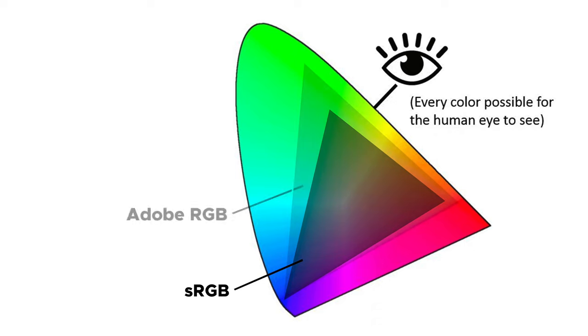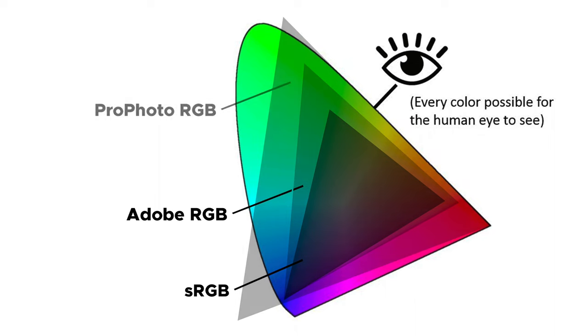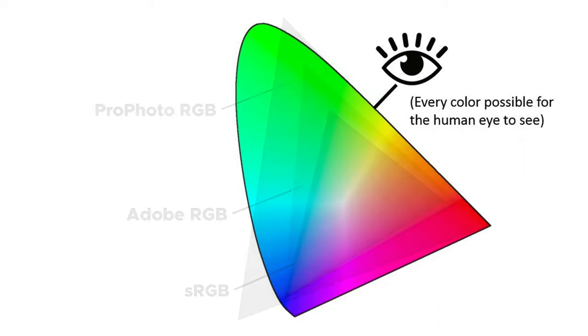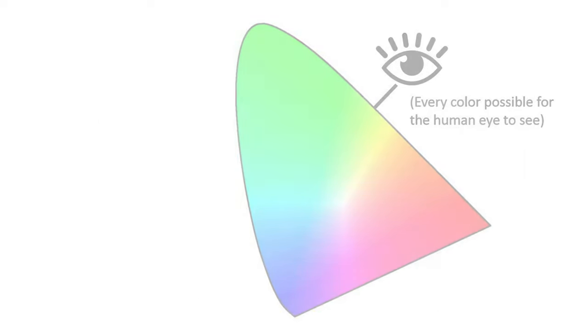If we want to broaden our color space, we can choose Adobe RGB, but again it limits our range. As a photographer, you would like to choose maximum color range, so I prefer choosing ProPhoto RGB which covers a wide range of colors. If you want to know more about color gamut, you can check out the link in the description.